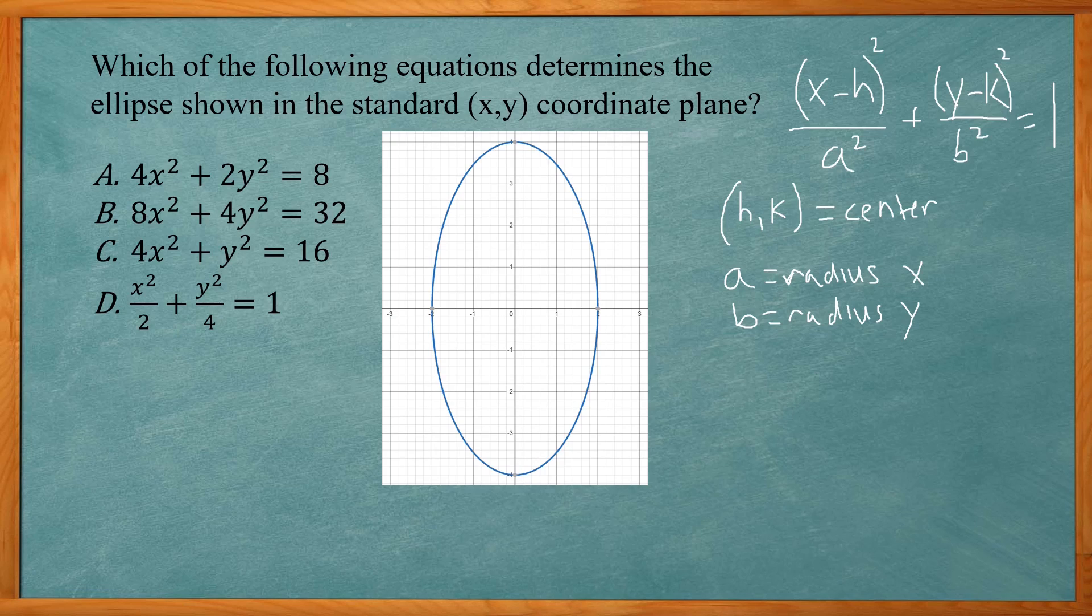So in this problem, our center is right in the middle, 0, 0. If we look in the x direction, our radius here is 2, and radius in the y direction is 4. Alright, so center 0, 0, radius in the x direction was 2, the y direction was 4.